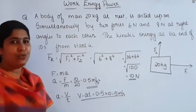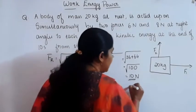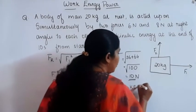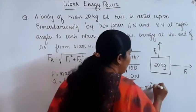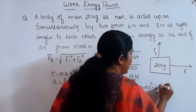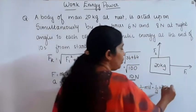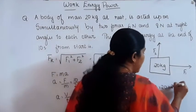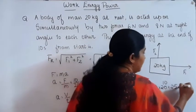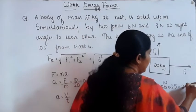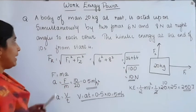Now it is easy to find the kinetic energy at the end of 10 seconds. KE equals half MV² equals half into 20 kg into 5², which is half into 20 into 25. Cancelling, that gives 10 into 25, which equals 250 Joule. So 250 Joule is the kinetic energy possessed by that body.